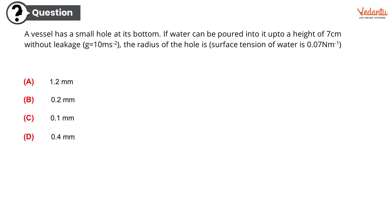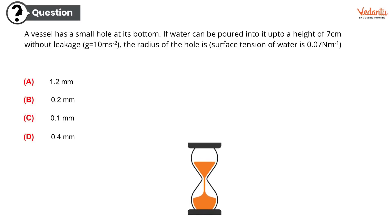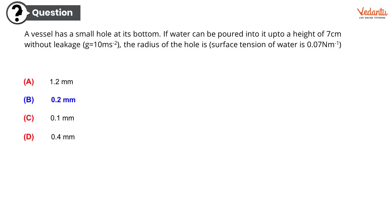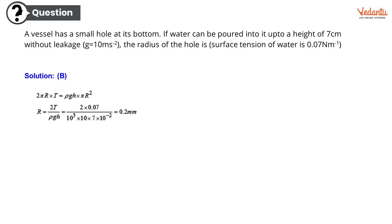The options are option A, 1.2 mm; option B, 0.2 mm; option C, 0.1 mm; or option D, 0.4 mm. And your time starts now. My dear students, the correct answer is option B, 0.2 mm. I really hope that you got it right. Congratulations. It really looks like the straightforward application of the formula, isn't it?